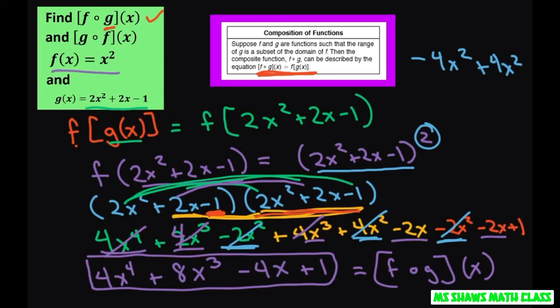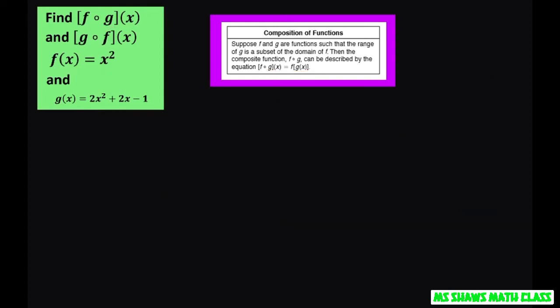Now the next one's easier, thank goodness. So we do the same thing. And this time, we're doing our outer function is g and our inner function is f. So let's substitute our f of x. So we have g f of x is x squared.